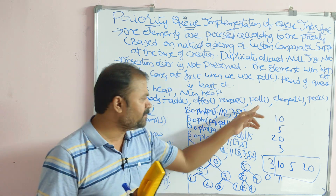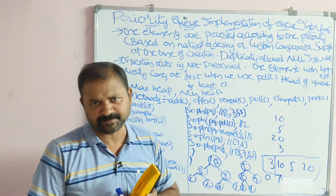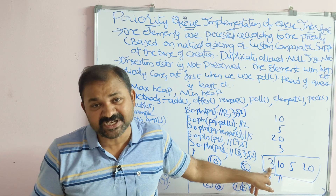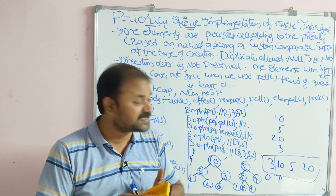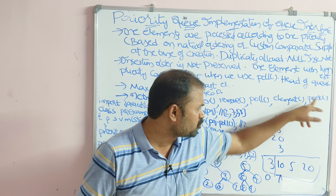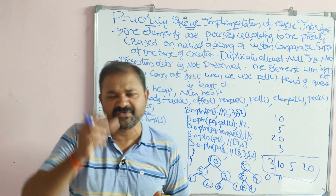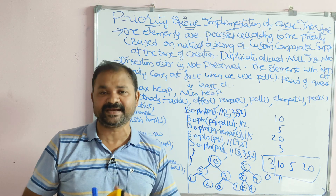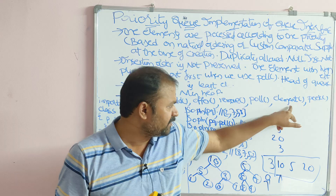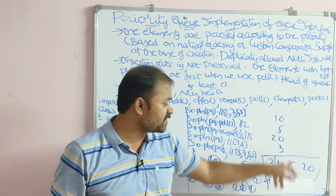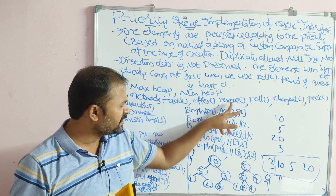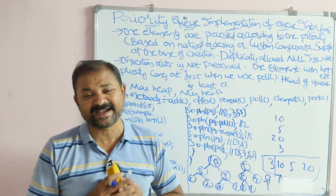The poll method is similar to remove — it also removes the topmost element and returns it. The difference is: if the condition fails and the queue is empty, poll returns null instead of throwing an exception. The element and peek methods return the topmost element without removing it — the pointer stays at the top. If the queue is empty, element throws an exception whereas peek returns null.